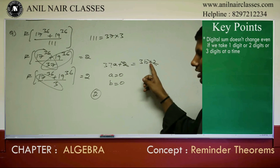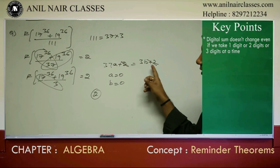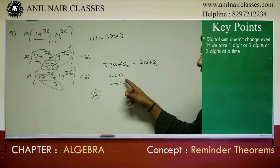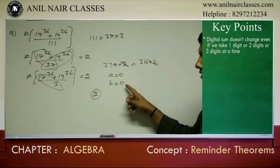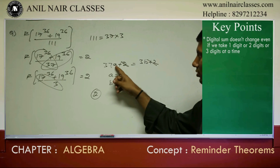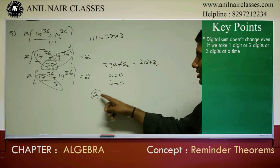37a equals 3b. Both are equated when a equals 0 and b equals 0. So 37 into 0 plus 2 gives the answer: the remainder is 2.